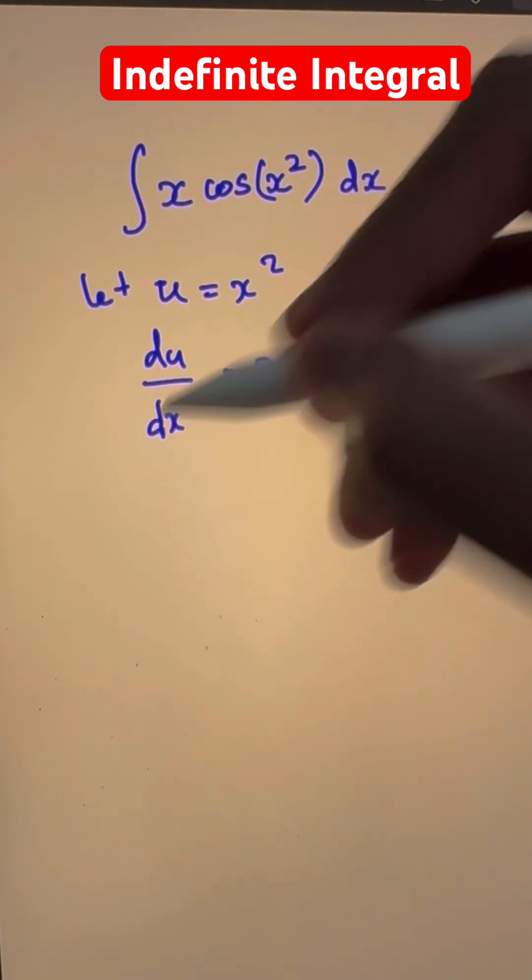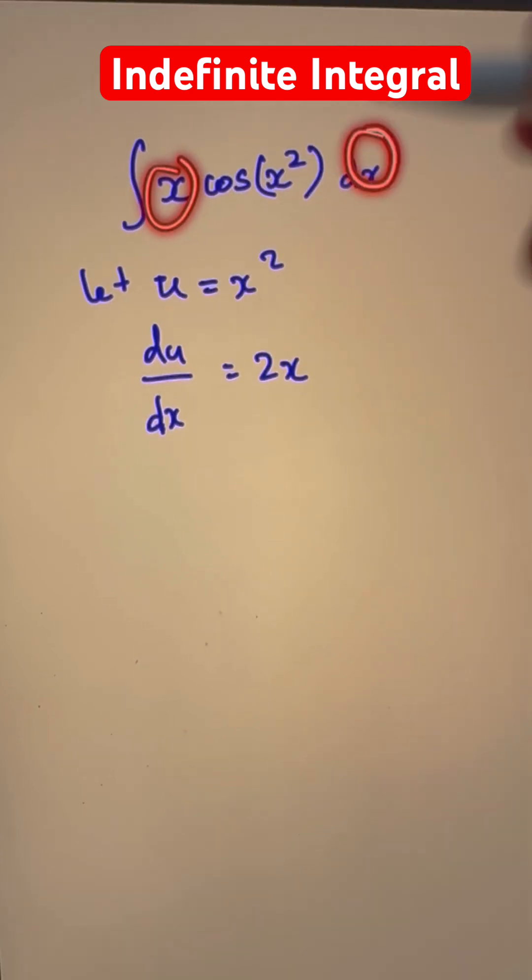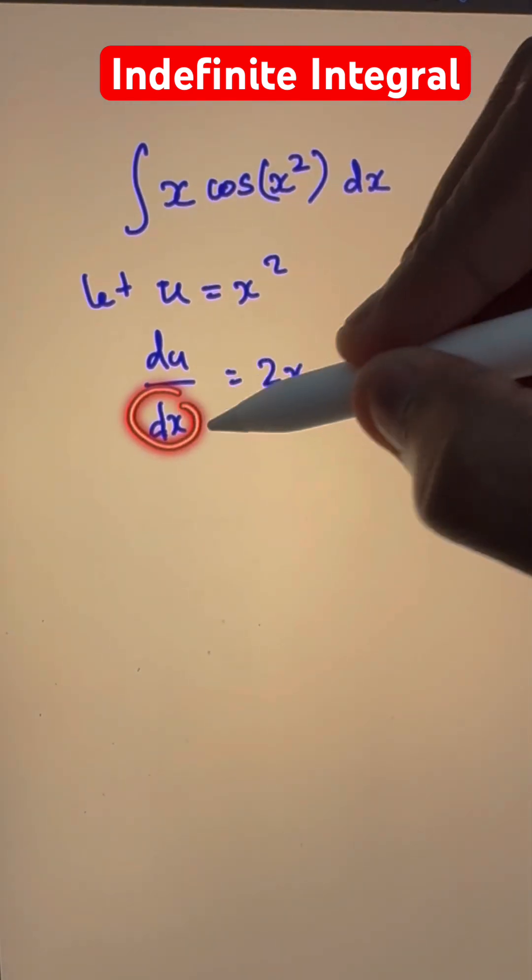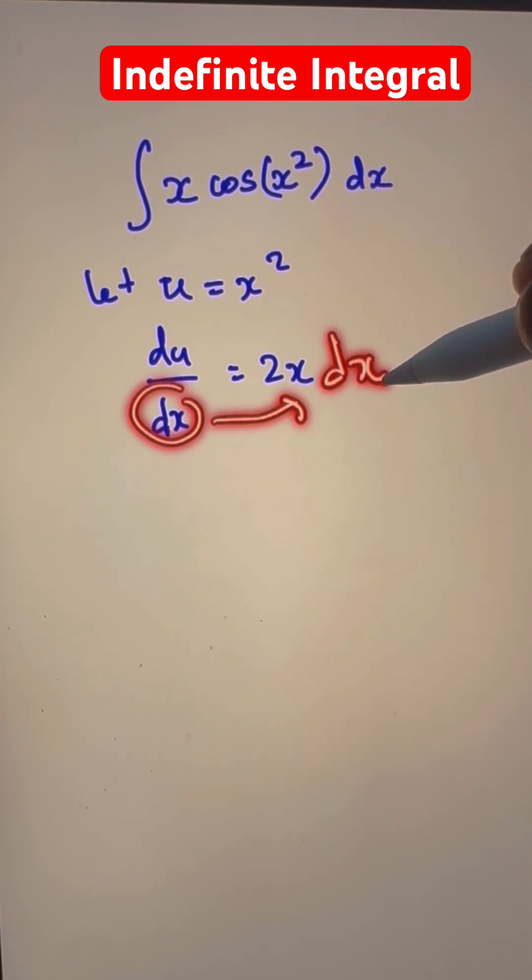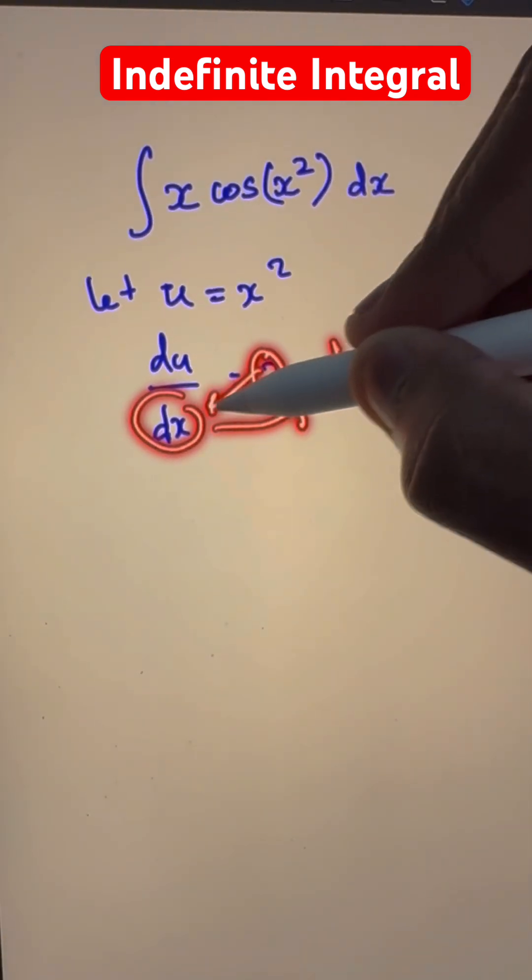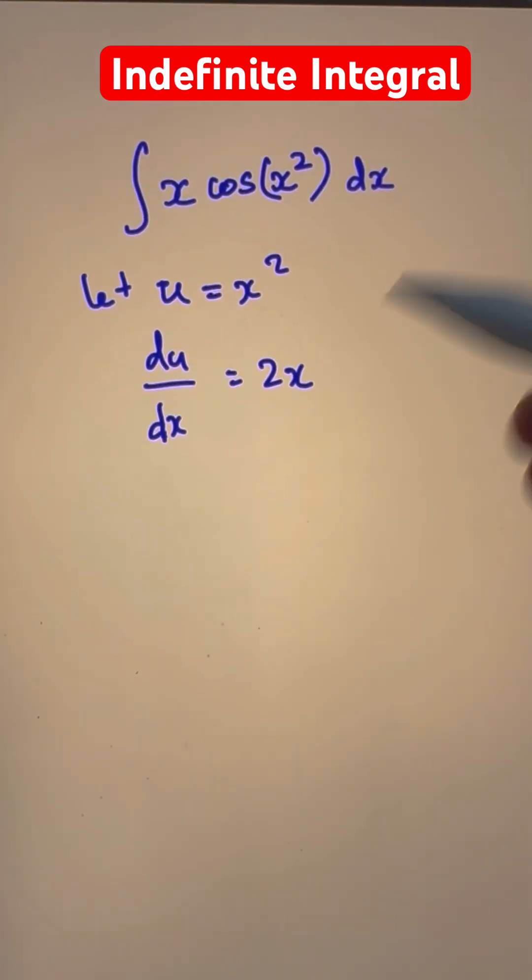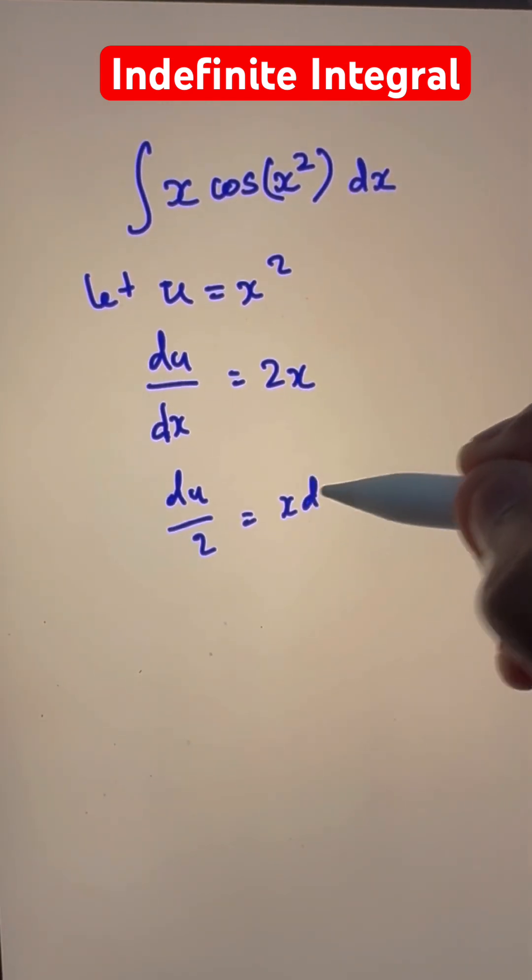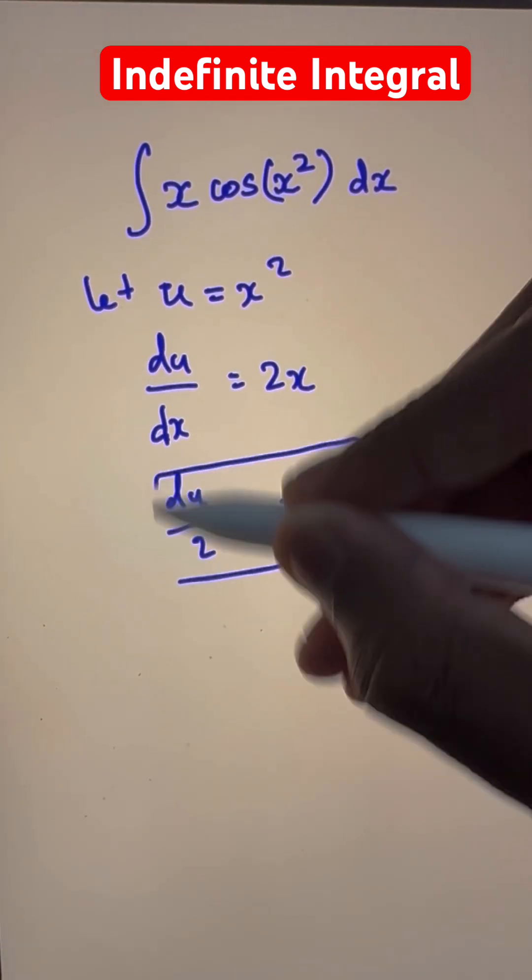And therefore, we have only x dx over here. But then this is du by dx is 2x. So let's make x dx a subject. So we multiply dx over here and bring 2 down this way.